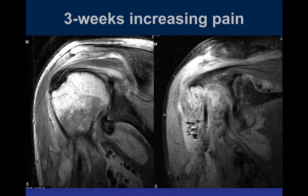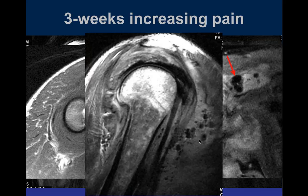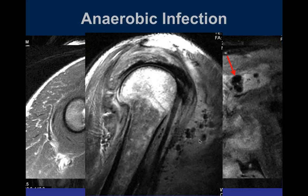Three weeks later, coronal T1 and PD fat-sat images show persistent edema within the humeral head at the supraspinatus attachment and continued irregular edema within the subacromial-subdeltoid bursa. Low-signal foci within the fluid — representing gas — are now visible. When air is seen in soft tissues in this setting, one must strongly consider anaerobic infection rather than staph aureus. This was a mixed infection; the patient initially grew staph aureus but subsequently developed an anaerobic component.